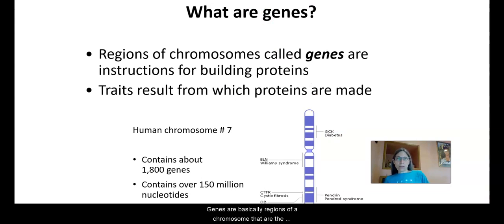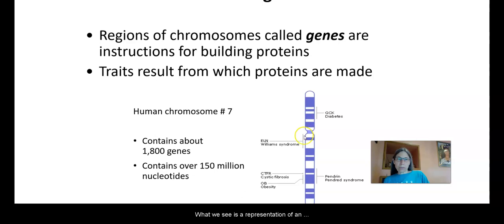Okay. So genes are basically regions of a chromosome that are the instructions for building proteins. And then traits are the result of protein function. So looking at an image here, what we see is a representation of an individual chromosome. This happens to be human chromosome number seven. It contains 1800 genes. And each gene is made up of nucleotides. That is the A's, the C's, the G's and the T's. And in this particular chromosome, there are 150 million of those nucleotides. Okay. So this is a chromosome, but here we have individual regions, which are genes, which encode for these particular proteins.